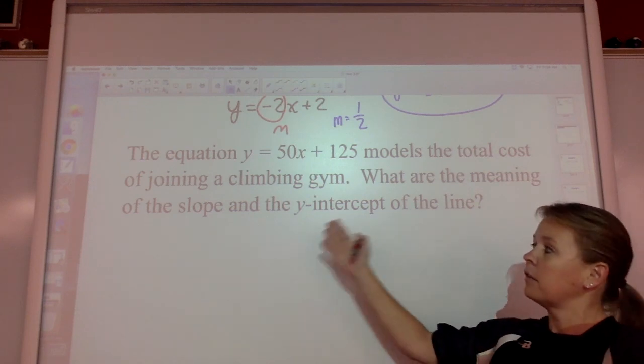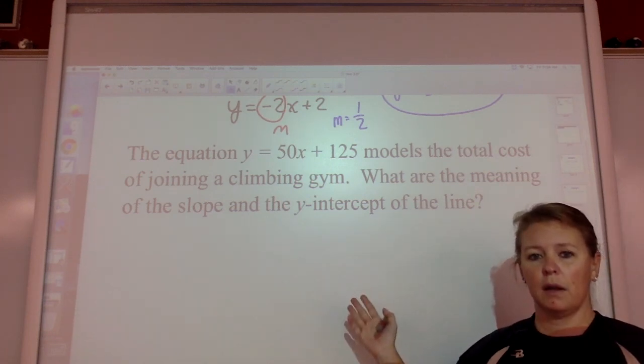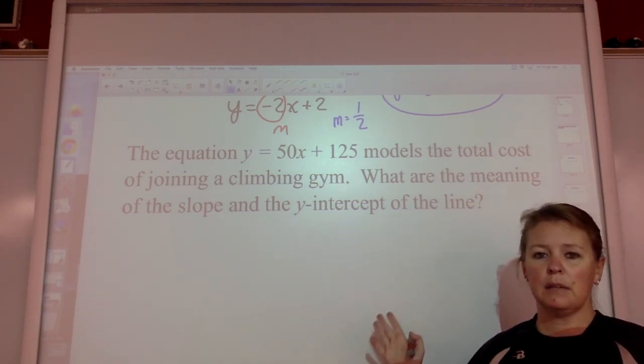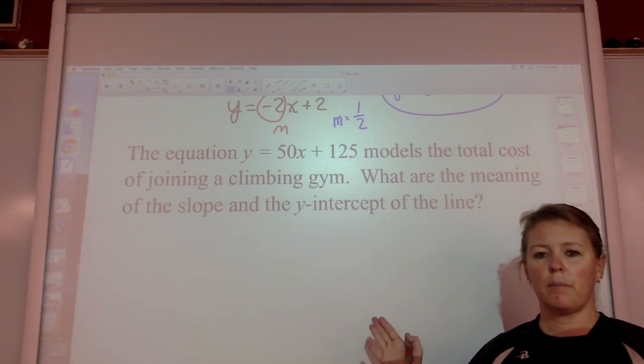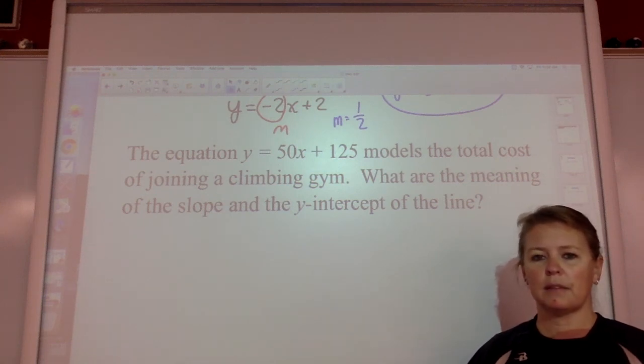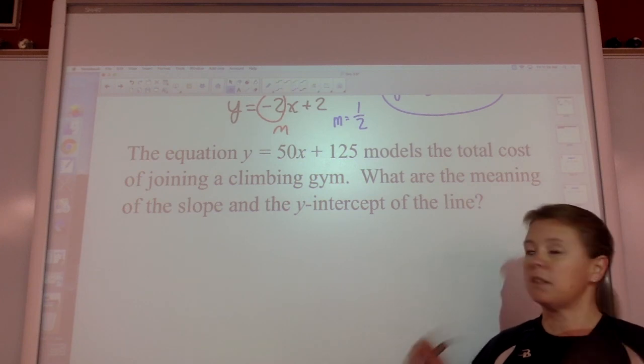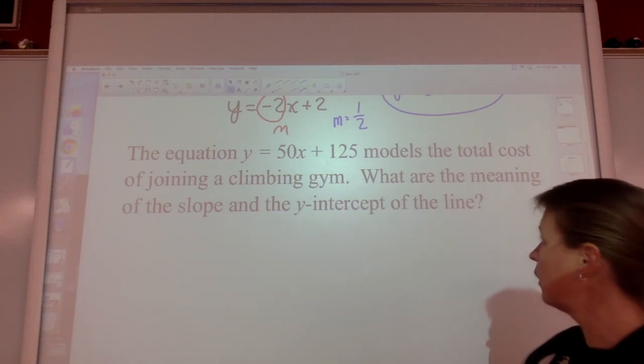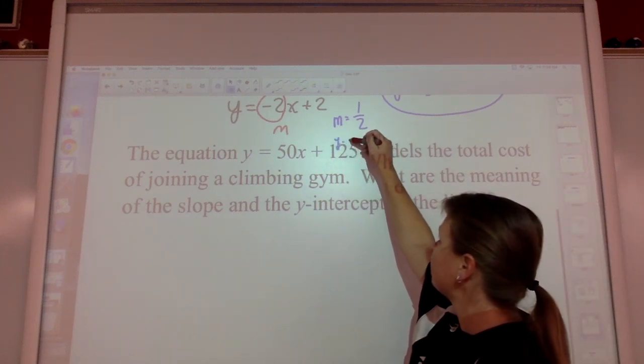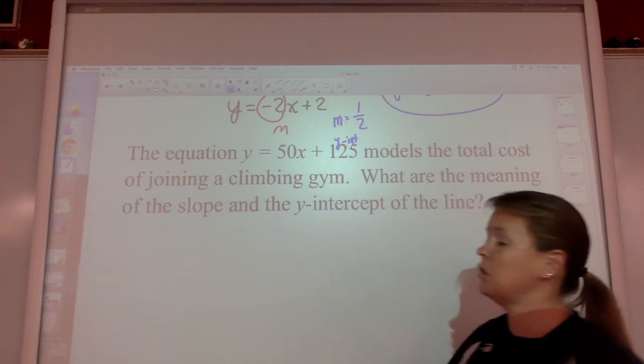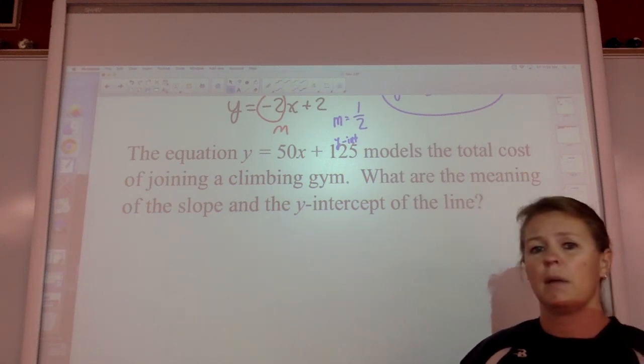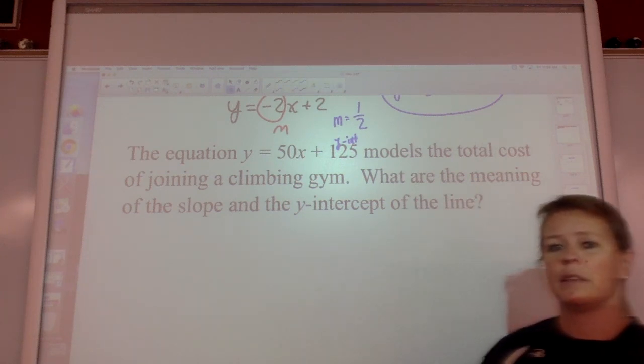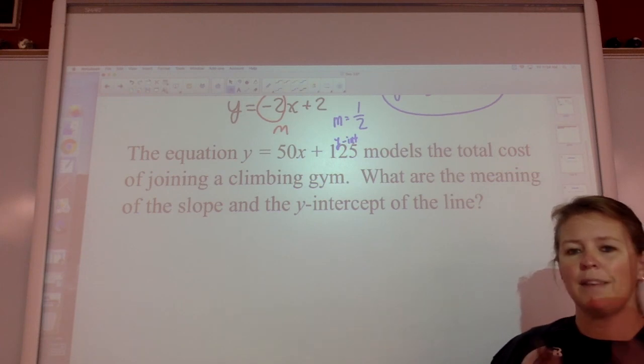You don't want to say the slope means rise over run, and the y-intercept means the starting point on the graph, or the base, or where it crosses the y-axis. That's what all slopes and y-intercepts mean. It's saying specifically in this problem, what do those mean? And we see here the y-intercept, I'll start with that. If you know anything about joining a gym, joining a climbing gym, becoming a member of any of that stuff, there's always a deposit. Like, what's the fee? What do you have to pay to get in?